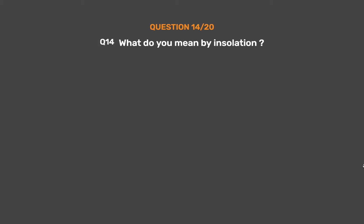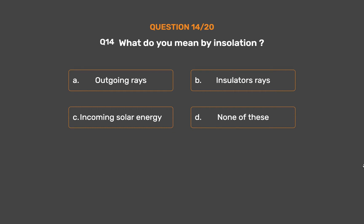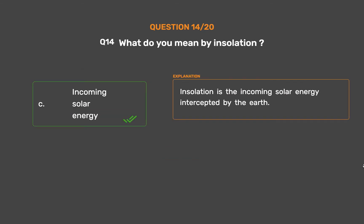Question number 14: What do you mean by insolation? Option A: Outgoing rays. Option B: Insulator rays. Option C: Incoming solar energy. Option D: None of these. The correct answer is Option C, Incoming solar energy. Insolation is the incoming solar energy intercepted by the earth.